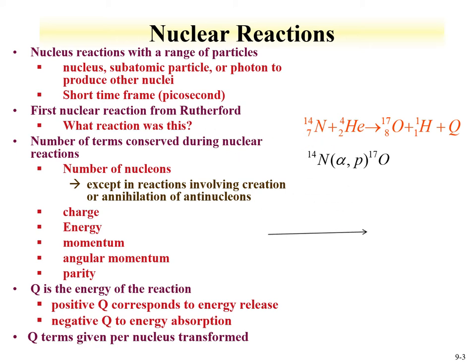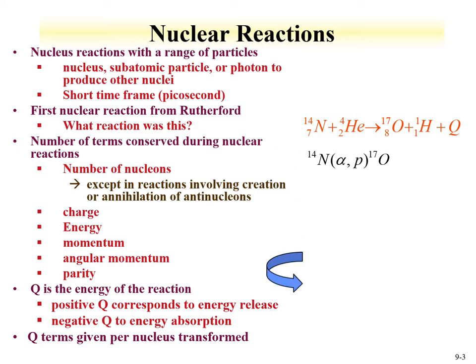Another way of writing this reaction is shown here: the target is the first term, followed by the projectile (here an alpha particle) and the outgoing particle (a proton), separated by a comma in parentheses, and then the product, oxygen-17. In nuclear reactions, a number of quantities are conserved: the number of nucleons (generally, at the energies involved), charge, energy (including mass), momentum, angular momentum, and parity. All these terms can help describe reactions and understand reaction mechanisms.